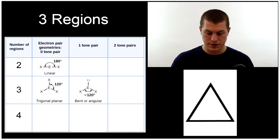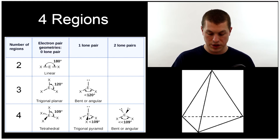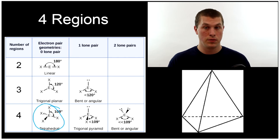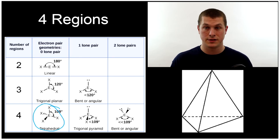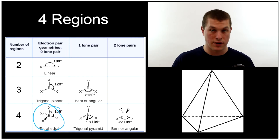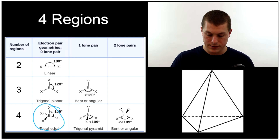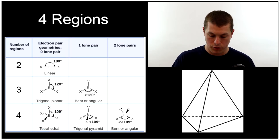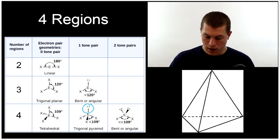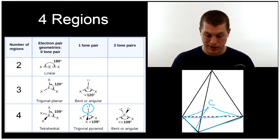Let's look at four regions of electron density. With zero lone pairs, the shape is called tetrahedral — there are no lone pairs, so it looks exactly like our electron geometry because atoms are at every single spot of electron density. Now if we replace one of those atoms with a lone pair, we've made a little triangular pyramid, so that's called trigonal pyramidal.